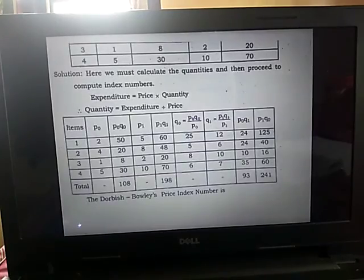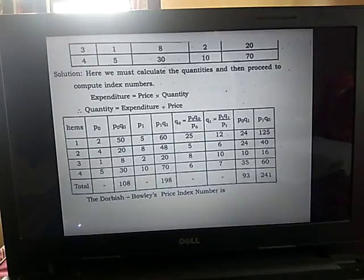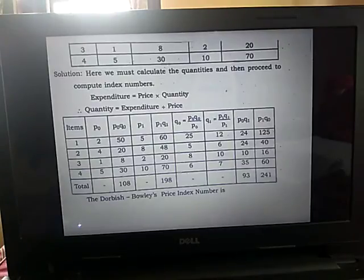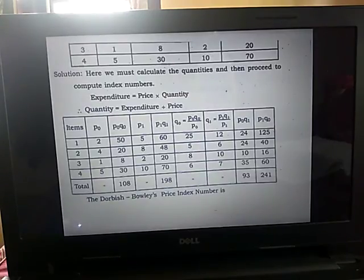So first we calculate the quantity, because we want the prices and quantities to calculate the price index number. The solution: we must calculate the quantities and then proceed to compute the index number. Expenditure is given by price into quantity, so quantity equals expenditure divided by price. We make a table with items, P0, P0Q0 (the total expenditure already given), P1, P1Q1 (also given). Then Q0 equals P0Q0 divided by P0, and similarly Q1.